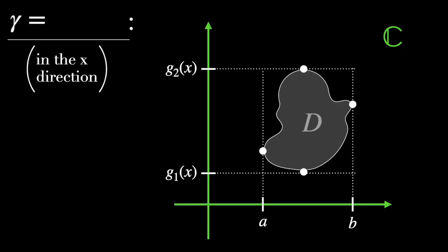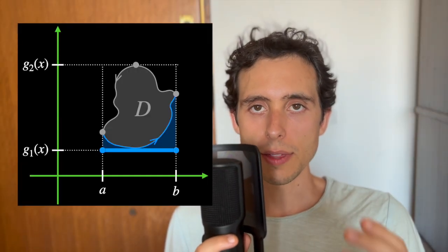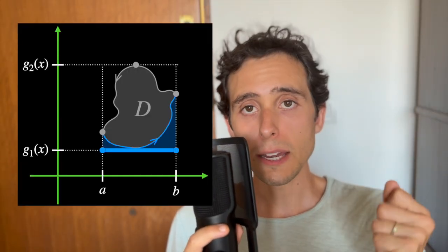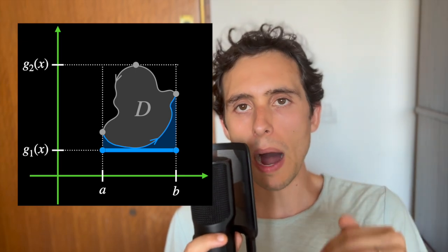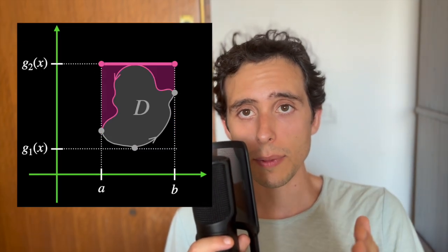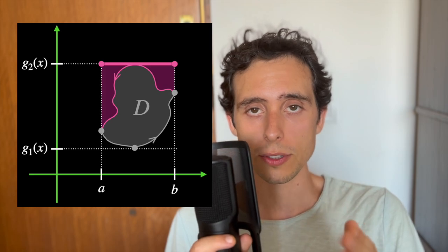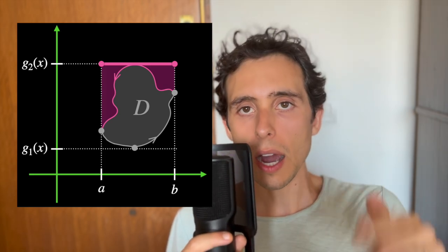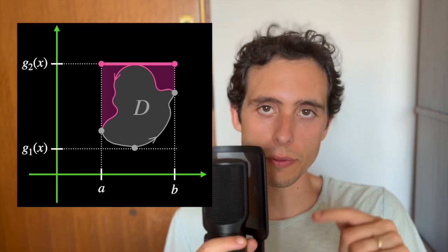Now let's break gamma, which is a closed curve, into two open curves, gamma 1 and gamma 2. Gamma 1 is the curve on top and gamma 2 the other part, so gamma is just the sum of them. The line segment connecting points A, G1(A) and B, G1(B) is the lower boundary for the closure of D. The line segment connecting B, G2(B) and A, G2(A) is the upper boundary. This way we can parameterize gamma to calculate the integrals we're interested in.